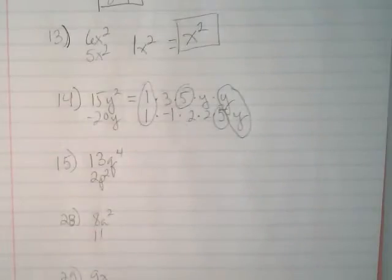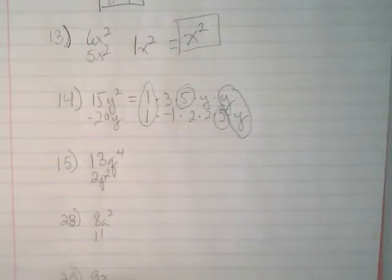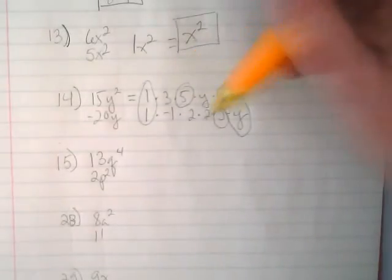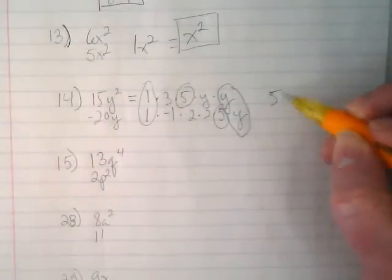So the greatest common factor of these two, we're going to ignore the negative 1. It's not a common factor, just like you would ignore the 3 here and the 2s here. So it's just 5y.